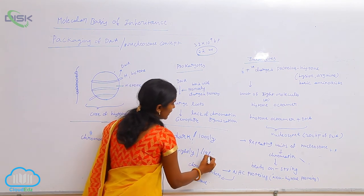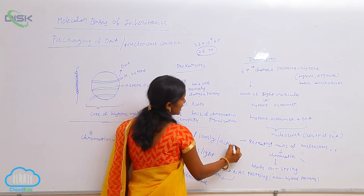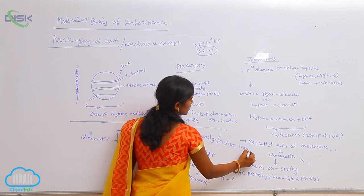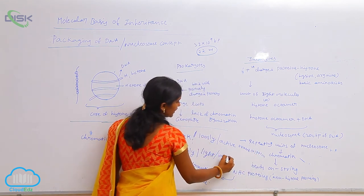Which one is more active? Euchromatin is active in transcription. During transcription, it is more active but heterochromatin is inactive.